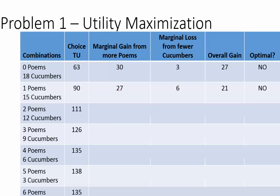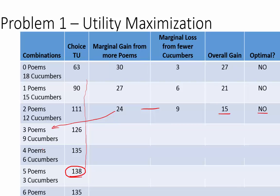Our next row: the third poem gives us 24 utils, we give up 3 more cucumbers worth 9 utils, and the difference is 15. Is this optimal? No, we're still going. Looking down at our total utility column, we can actually see the optimal point. We need to fill in all the rows. At 4 poems and 6 cucumbers, and then moving to 5 poems and 3 cucumbers.